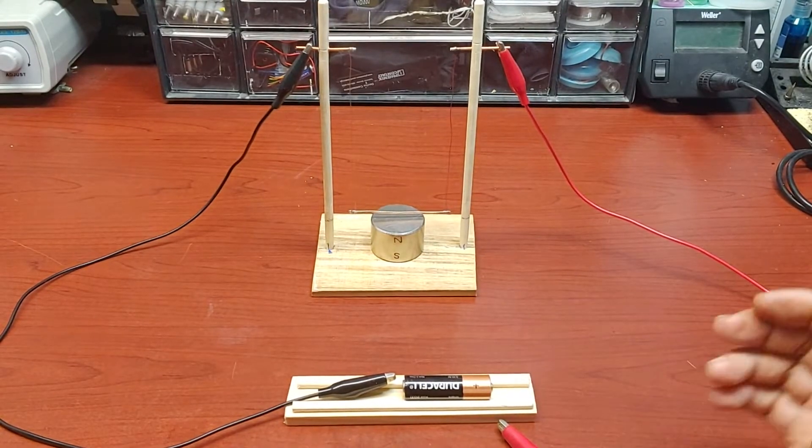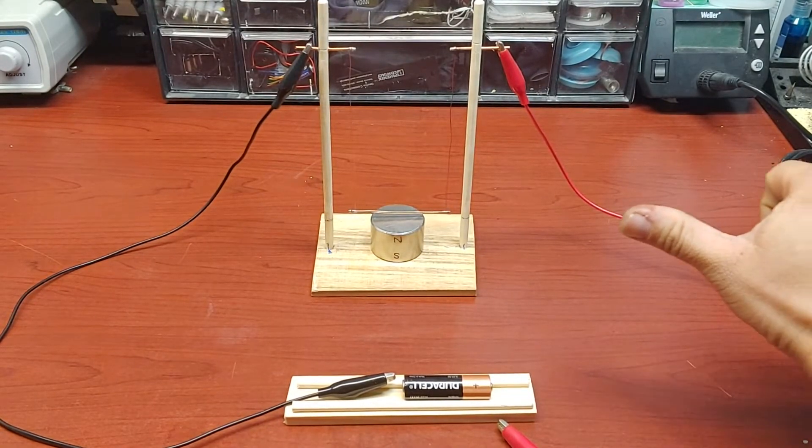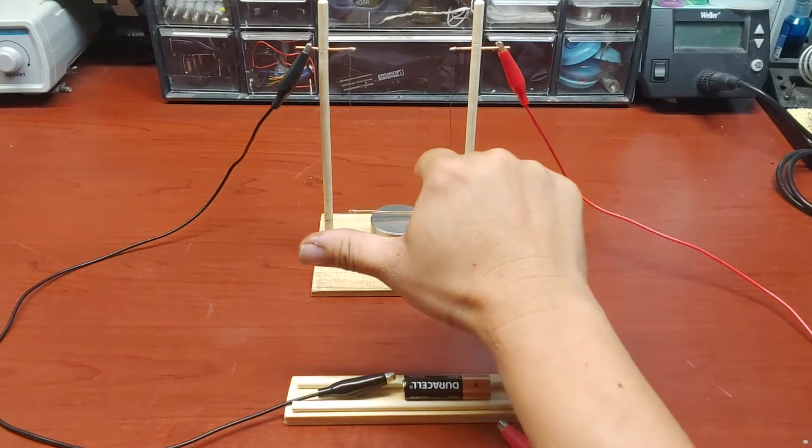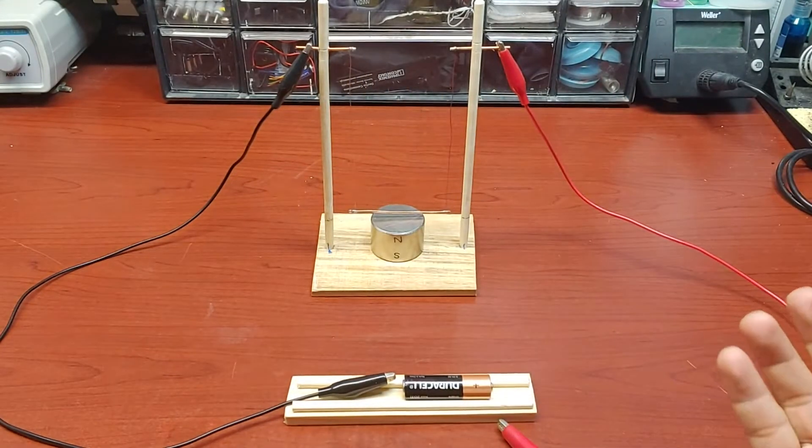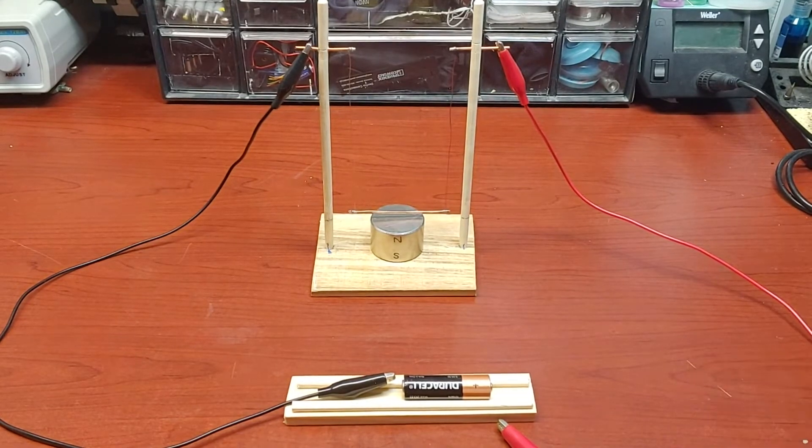If we use the right-hand rule for electric current direction and electromagnetic field, we can figure out the moving direction of the conductor.